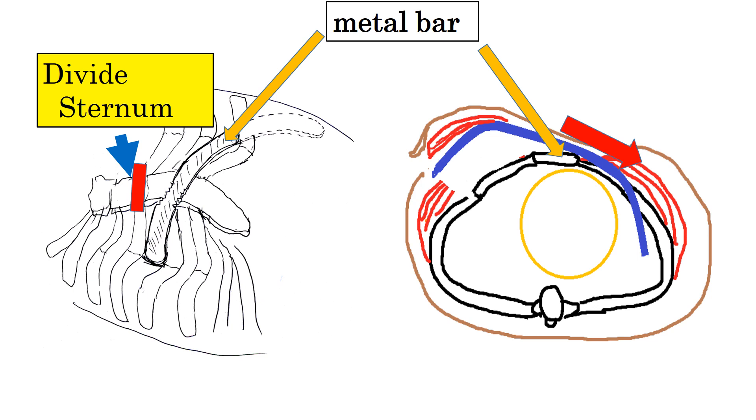For such cases, we cut the sternum and bend it. Then, we introduce one end of the bar into the chest cavity of one side.